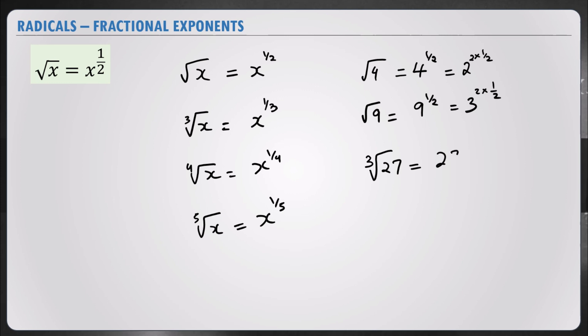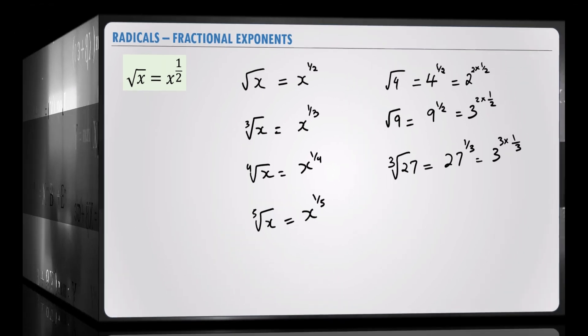Then what if we have the cube root of 27? That's equal to 27 to the power of 1 over 3, which is 3 to the power of 3 into 1 over 3. Always think of radicals as fractional exponents. And let's get into some practice.